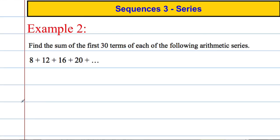Let's have a look at this example here. Find the sum of the first 30 terms of the following arithmetic series: 8, 12, 16, 20. Let's write the formula down again. The sum is equal to n over 2 lots of 2a plus n minus 1 times d. Let's write down what each term is. a equals 8, n equals 30, and d, the common difference, is clearly going up in 4s.